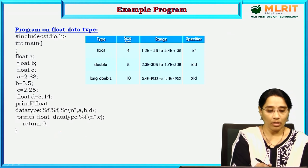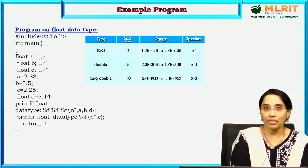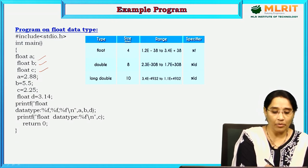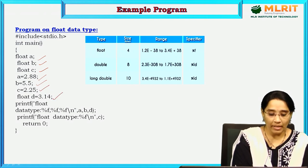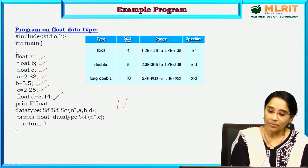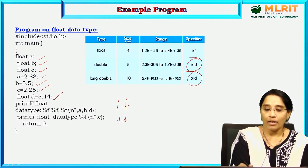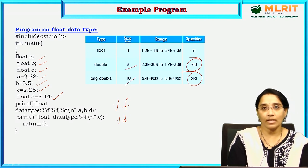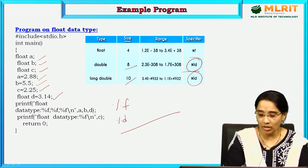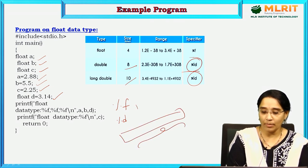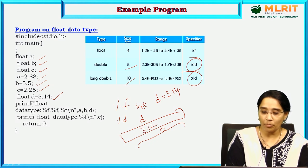Here is a sample program for float. Three variables are declared: float a = 2.88, float b = 5.5, float c = 2.25, and float d = 3.14. The format specifier for float is %f. For integer it is %d, for float it is %f, for double it is %ld, and for long double it is also %ld. The double size is 8 bytes and long double is 10 bytes.